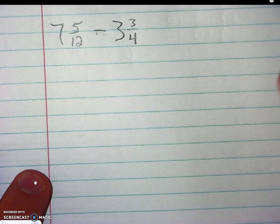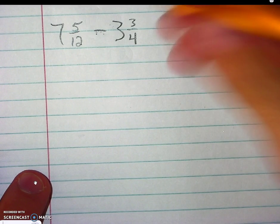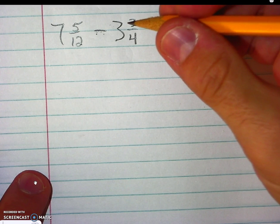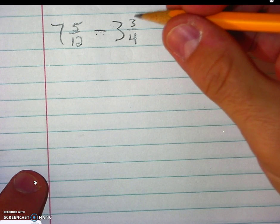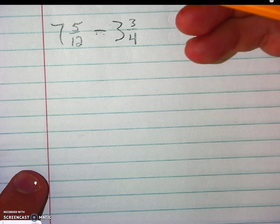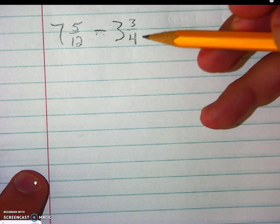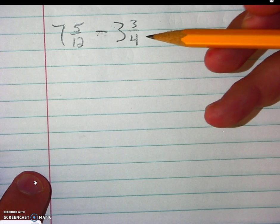Okay, we are going to be subtracting 3 and 3 fourths from 7 and 5 twelfths. So a couple things we're going to be looking at here. First off, we do have unlike denominators, so we're going to do something about that.